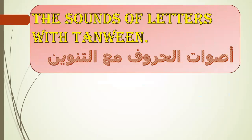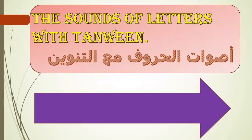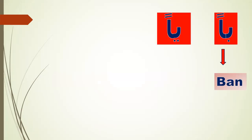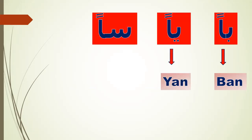The sounds of letters with tanween. Let's start with the first type of tanween, it's tanween with fatha, At-tanweenu bil-fatha. Fathatan. Please repeat after me: Ba-fathatan, ban. Ya-fathatan, yan. Sim-fathatan, san.